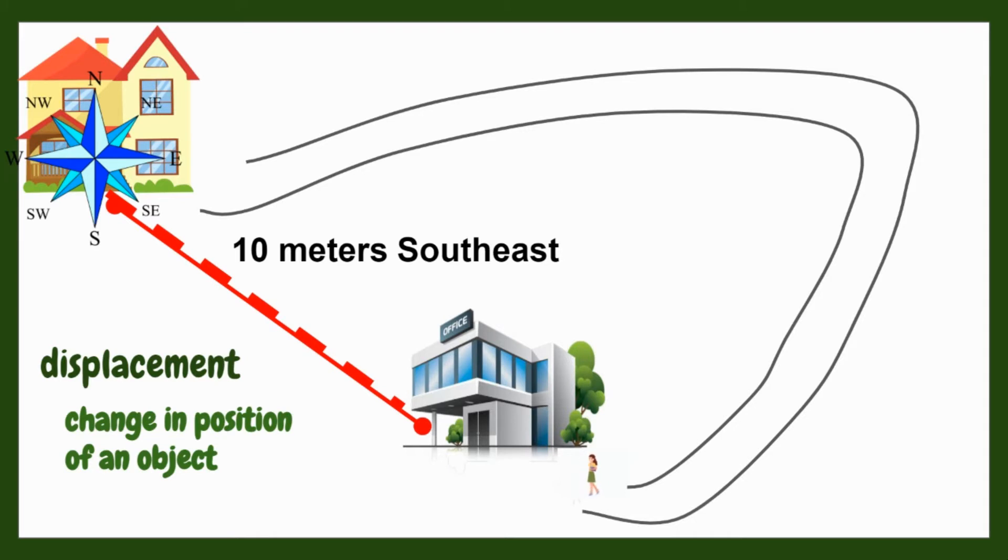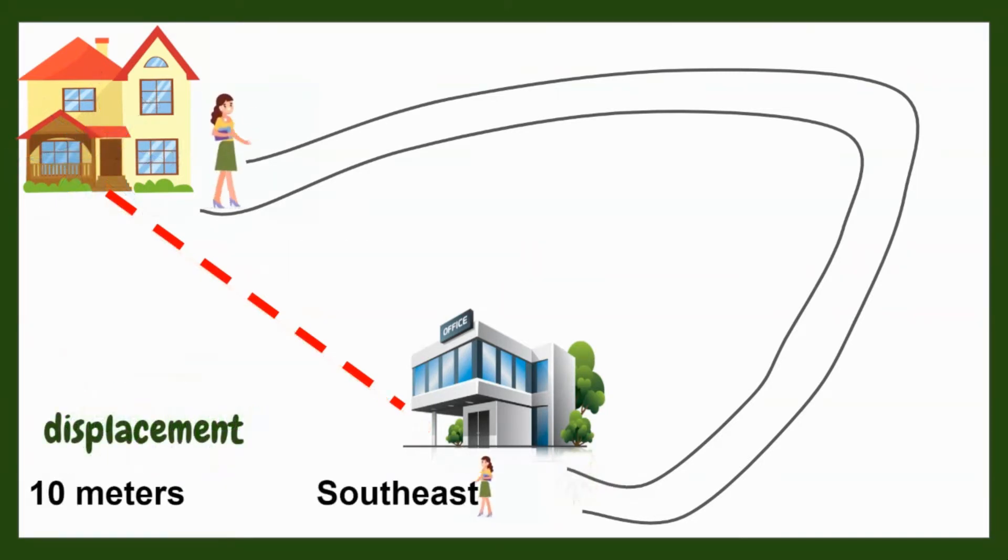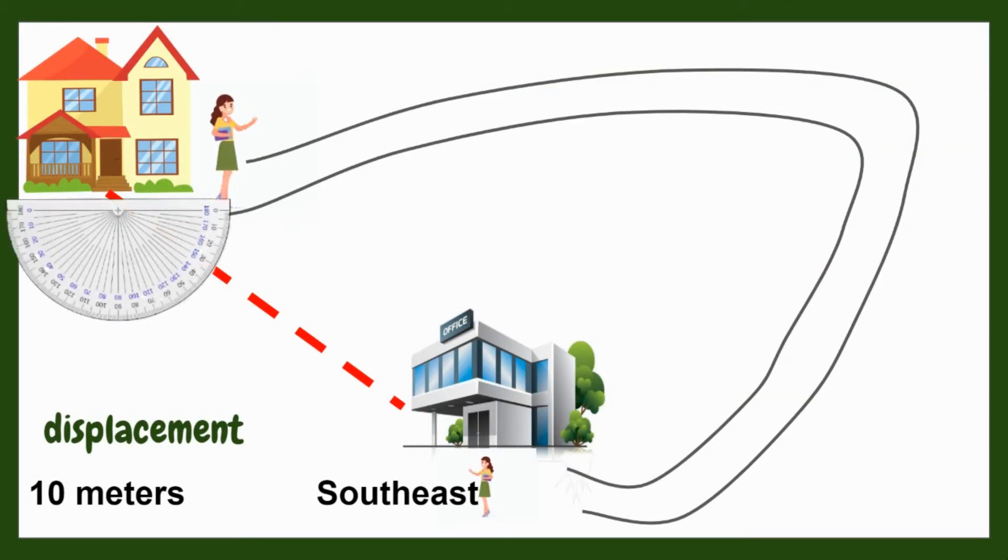In addition to the direction in the compass, we need to know more specific direction so we need to find the angle by using protractor. So, to summarize, the displacement of the person from home to his workplace is 10 meters, 30 degrees to the southeast. Or you can write it in 10 meters, 30 degrees south to east.